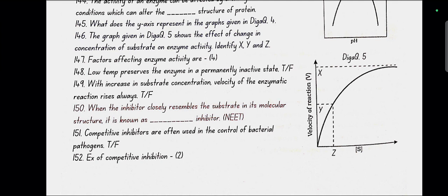Factors affecting enzyme activity are temperature, pH, concentration of substrate and inhibitors. Low temperature preserves the enzyme in temporarily inactive state, not permanently. With increasing substrate concentration, velocity of enzymatic reaction rises always. No false, does not rise after attaining Vmax.